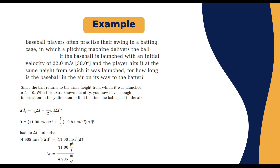To find delta t, we use the kinematic equation: Δdy = v_iy × Δt + ½ × a_y × Δt². Since the ball returns to the same height, Δdy = 0. The ball goes up to its highest point and comes back down. Substituting: 0 = 11 × Δt + ½ × (−9.81) × Δt².